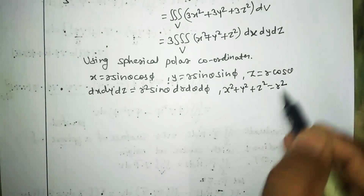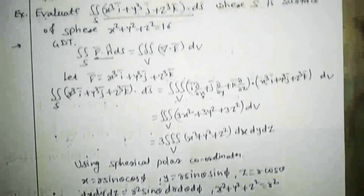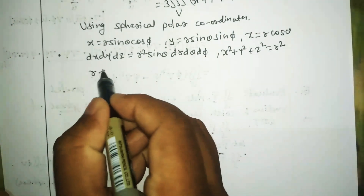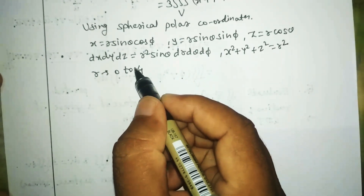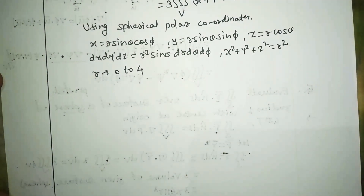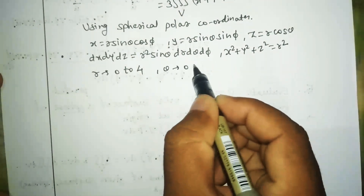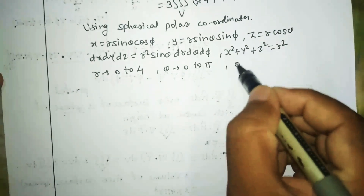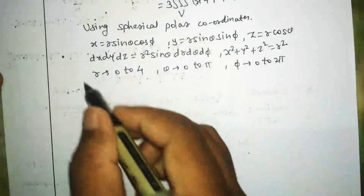Also, x² + y² + z² = r². We are evaluating over the whole sphere. The radius is 4 (since x² + y² + z² = 16 = 4²), so r varies from 0 to 4, θ varies from 0 to π, and φ varies from 0 to 2π.